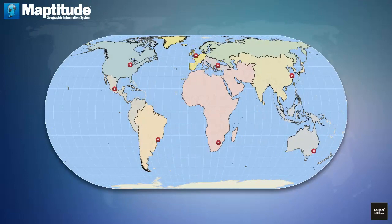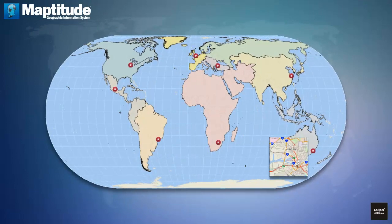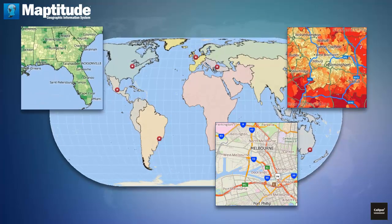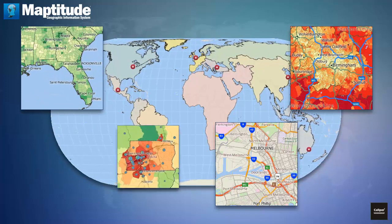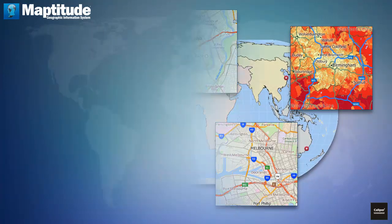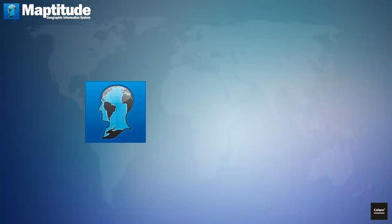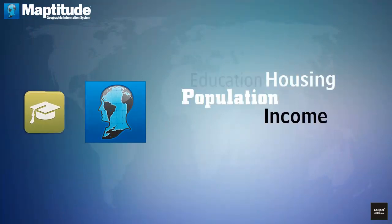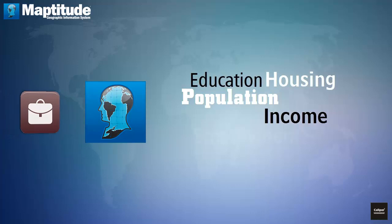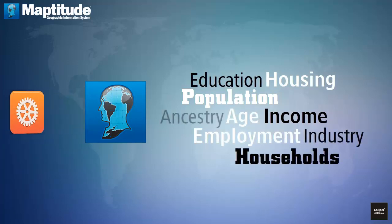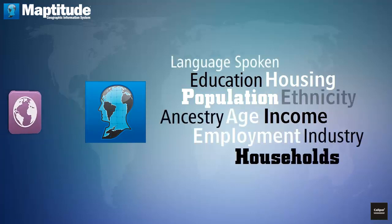Map your data anywhere in the world, or use any of the detailed country packages for street level, postal code or political boundary mapping. In addition, the country packages are packed with valuable demographic data, including population, income, housing, education, employment and more.